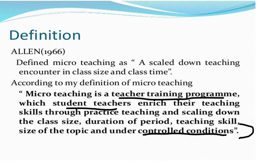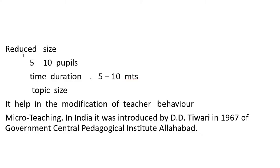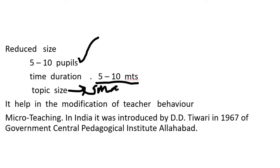Now we are going to talk about scaled down teaching. Reduced size means 5 to 10 people. Duration means 5 to 10 minutes. Topic size means small. It helps in the modification of teacher behavior.